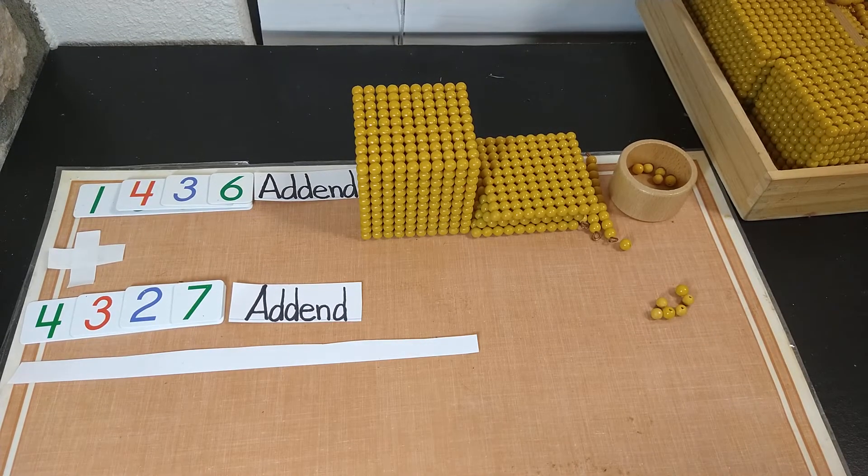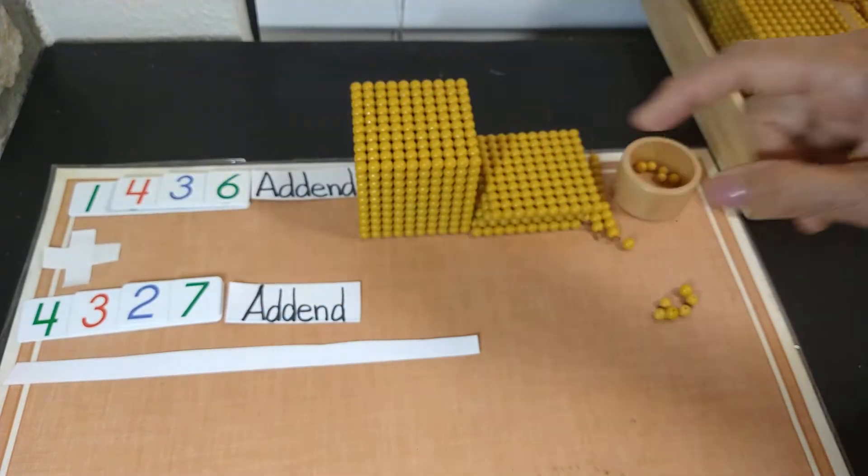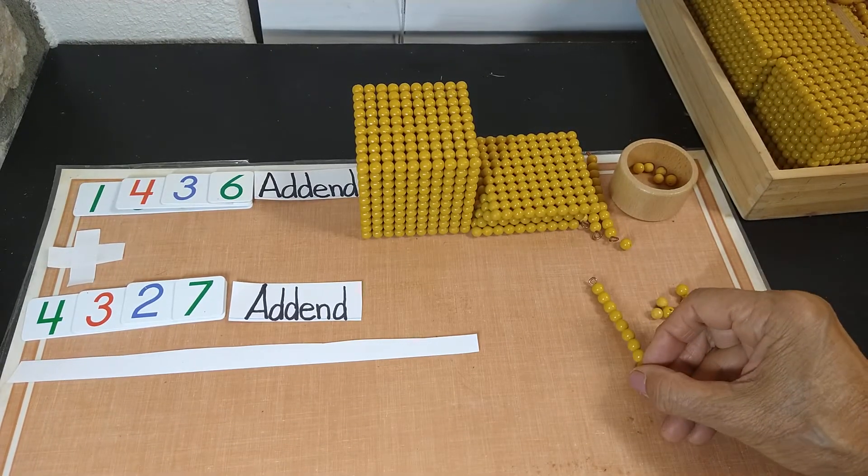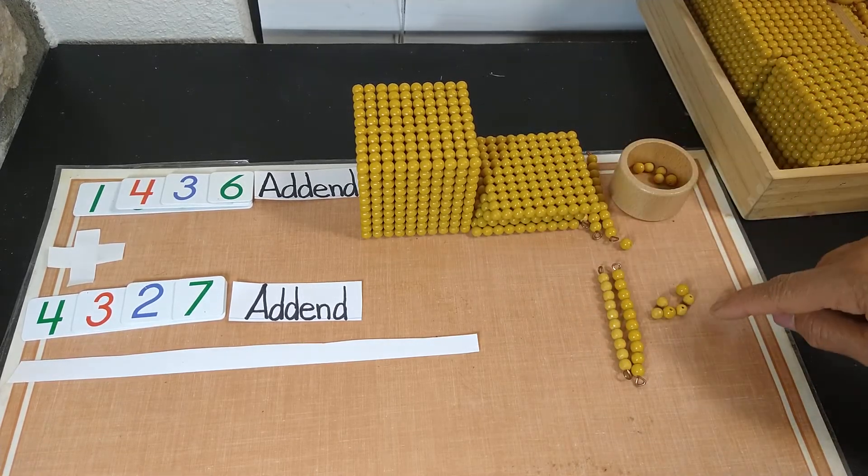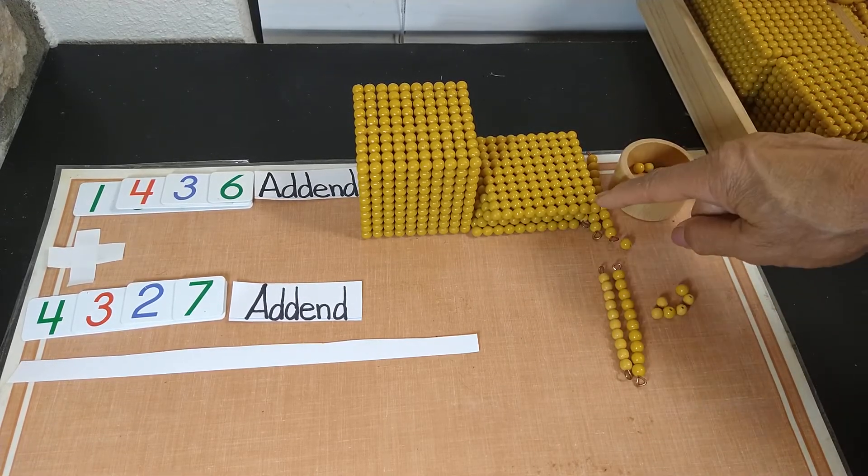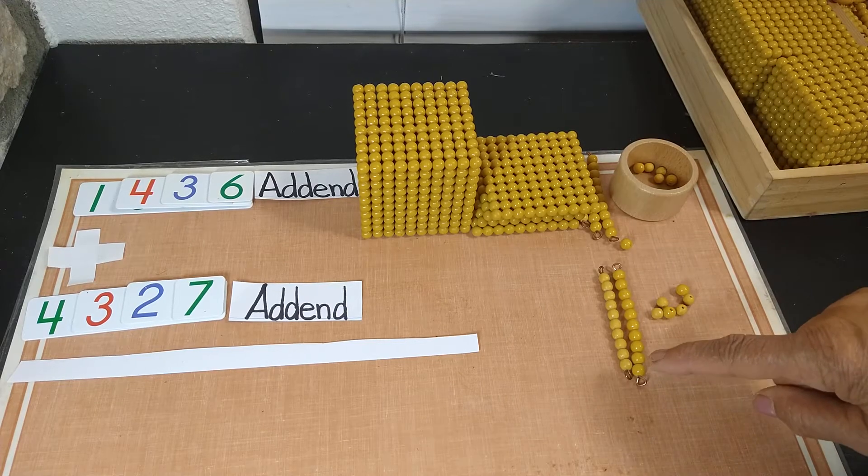So how many tens do we need? We need 2 tens. 1,10. 2,10. So units go under the units category. Tens will go under the tens category.